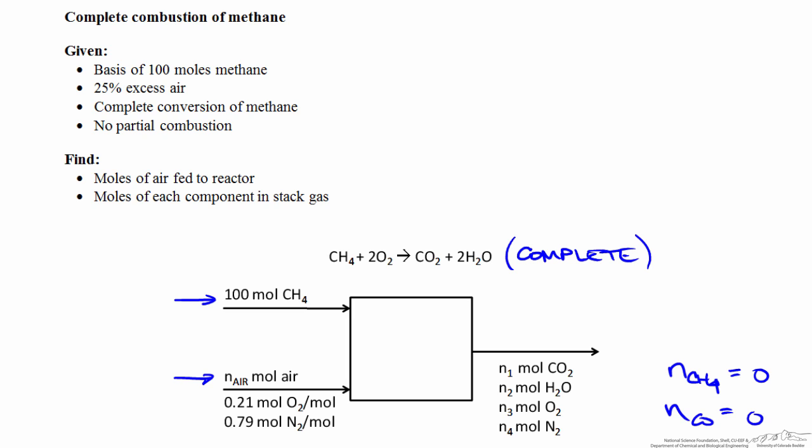The complete combustion reaction shows us that we should expect to find carbon dioxide in the output, as well as water. Because air is fed at excess, we know that not all the oxygen is going to be consumed in the reaction. Air is primarily nitrogen, which is inert in this case, so we're also going to have nitrogen in the output. With all the relevant species accounted for, we can start setting up our system of equations.